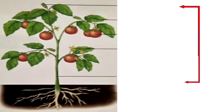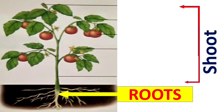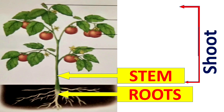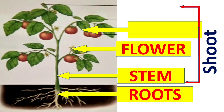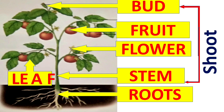In this picture, the part that grows below the soil is called roots. The part that grows above the soil is called the shoot. The shoot includes the stem, flowers, fruits, buds, and leaf.